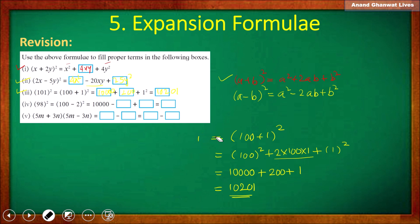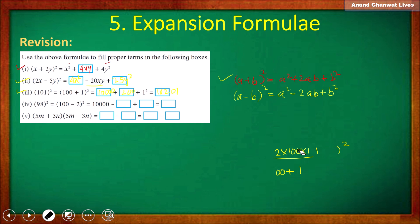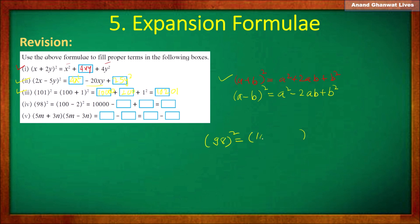The 4th question is the square of 98, which we express as (100 − 2)². The subtraction of two terms is present, so we should use the second formula, (a − b)².